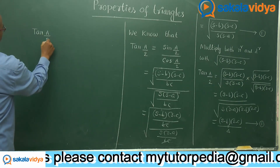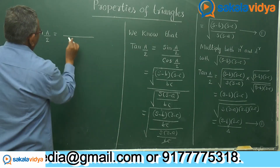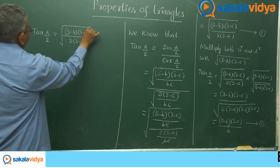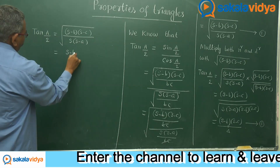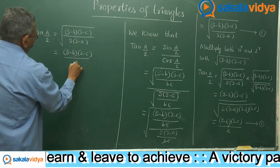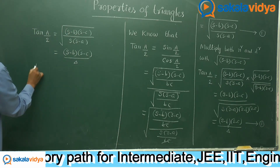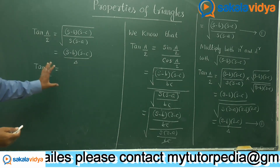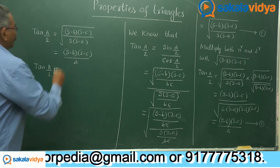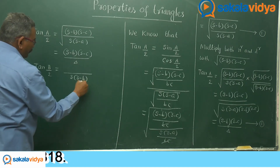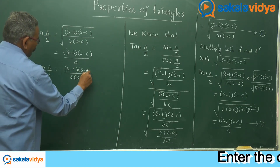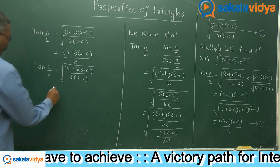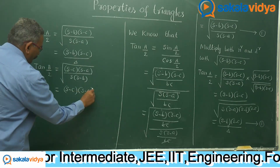tan(A/2) equals √[(s−b)(s−c) / s(s−a)], which can also be written as (s−b)(s−c) / delta. Now try tan(B/2) yourself before watching. tan(B/2) equals √[(s−c)(s−a) / s(s−b)], which can also be written as (s−c)(s−a) / delta.